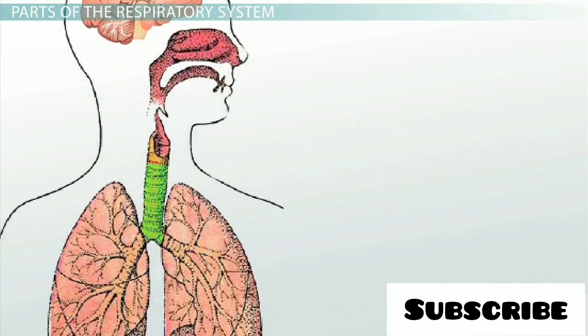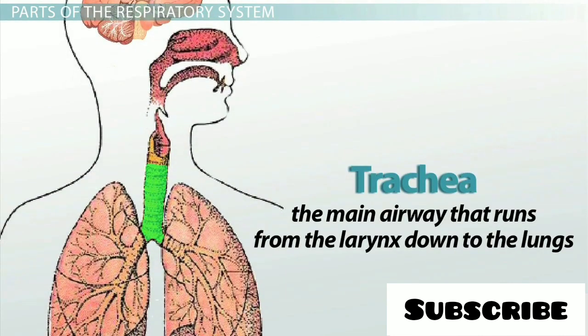The air then enters the trachea, which is the main airway that runs from the larynx down to the lungs. The trachea is known to most people as the windpipe.